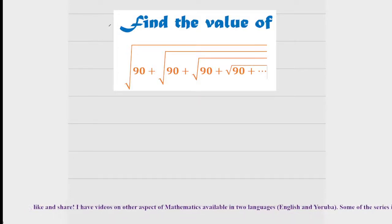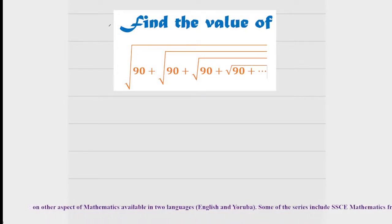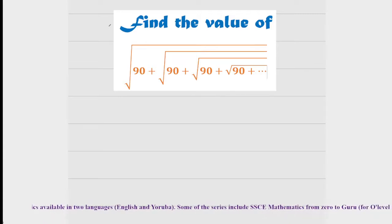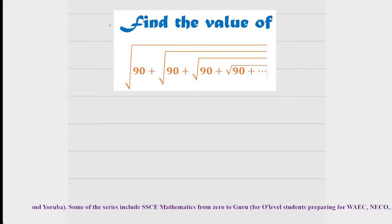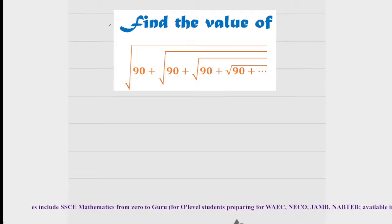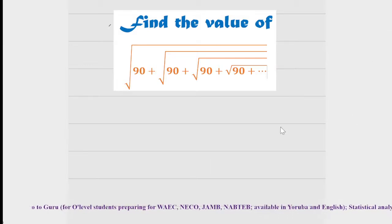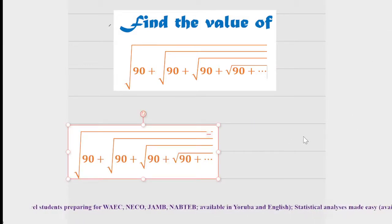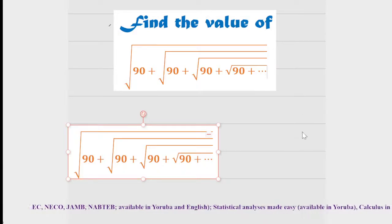Hi guys, welcome back. How do you solve this kind of question you are seeing on the screen right now? It appears difficult, isn't it? But it is very simple to solve. So you have square root of 90 plus square root of 90 plus square root of 90 plus square root of 90, and so on. How do you solve this kind of question? It is not difficult to solve at all.